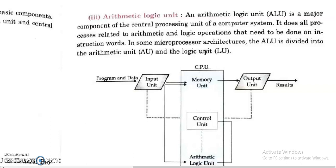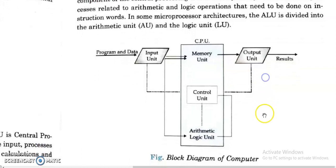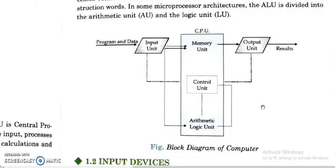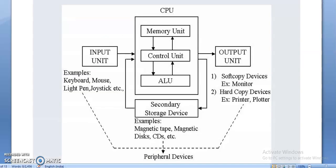We will now study the block diagram of a computer. In your book on page 13 there is a diagram, and here I have brought a more expanded version of that block diagram. In this diagram we can see the CPU, which is comprised of memory unit, control unit, and ALU, along with the input unit connected to the computer and the output unit.